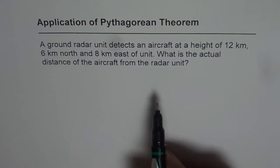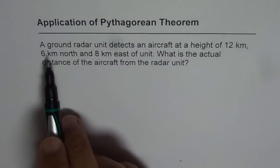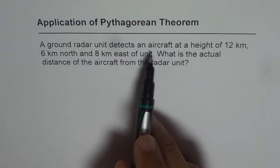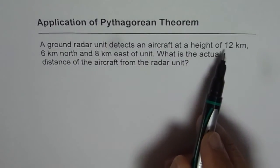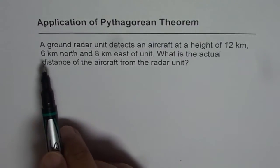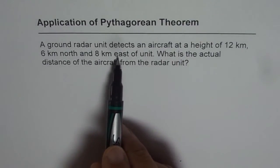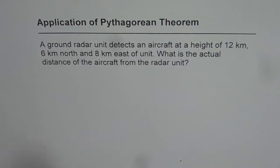Now first step is to sketch the diagram. It says a ground radar detects an aircraft at a height of 11 km, 6 km north and 8 km east of unit.